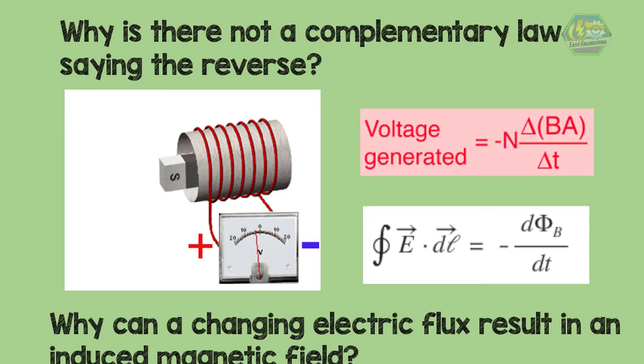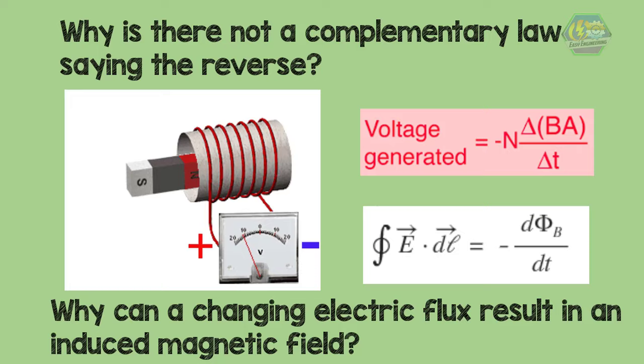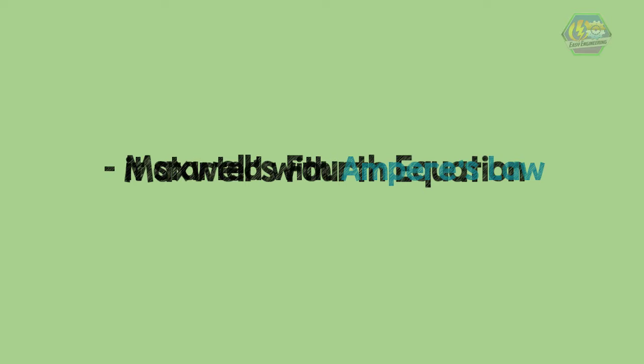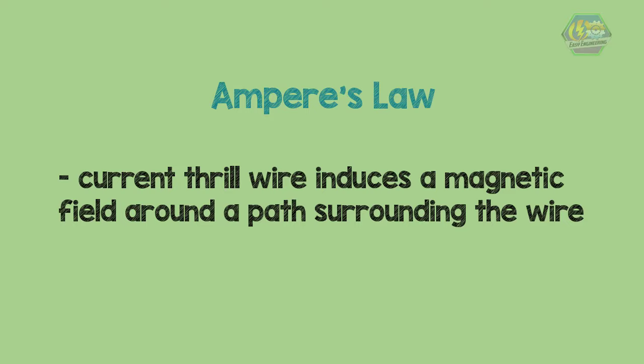Now that will be answered in his fourth equation. Here, in Maxwell's fourth equation, he started with Ampere's law, which states that current through a wire induces a magnetic field around a path surrounding the wire. Maxwell added what is known as the displacement current into Ampere's law to complete the equation.